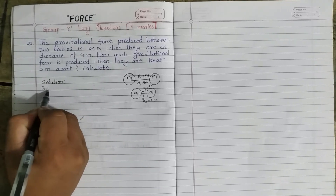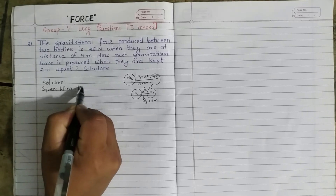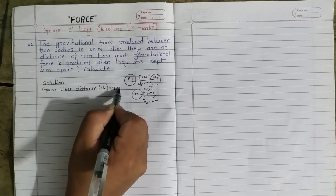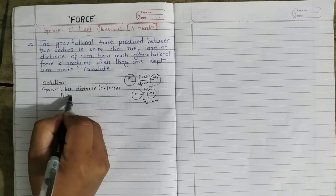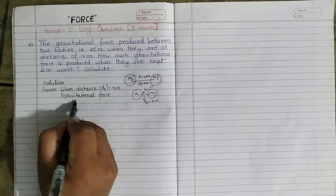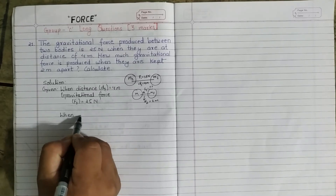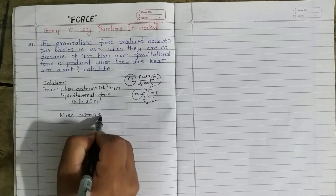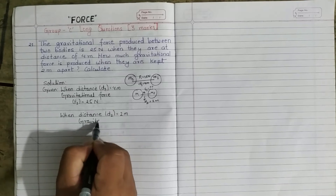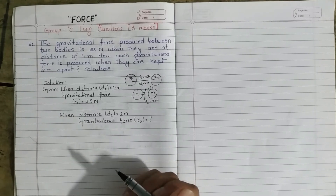Given: when distance d1 equals 4 meters, gravitational force F1 equals 25 Newton. When distance d2 equals 2 meters, gravitational force F2 equals what — we need to calculate it.